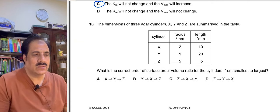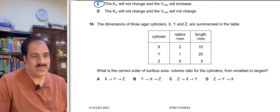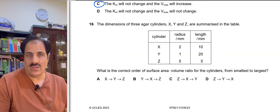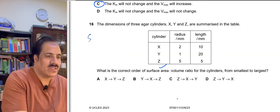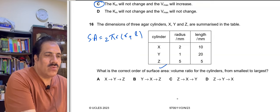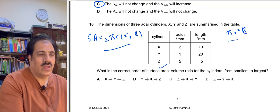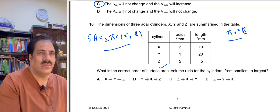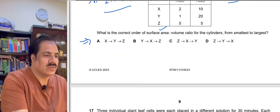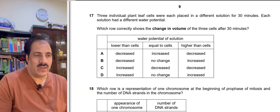Question 16: The dimensions of three alveolar cylinders X, Y, and Z are given as radius and length. The correct order of surface area to volume ratio from smallest to largest must be calculated. Surface area of a cylinder = 2πr(r + l) and volume = πr²l. Calculate surface area and volume for each, find the ratio, and order them accordingly.